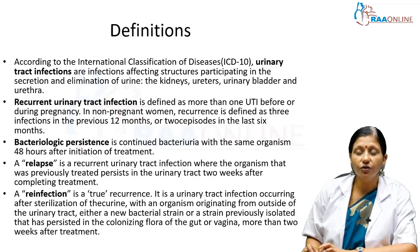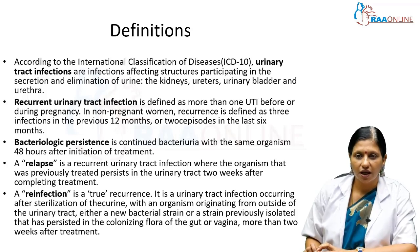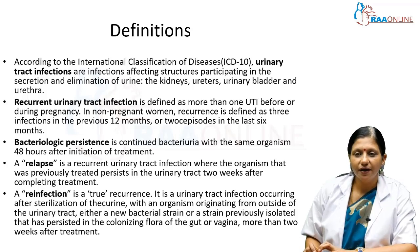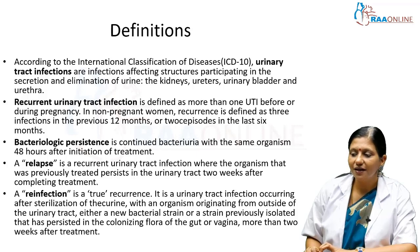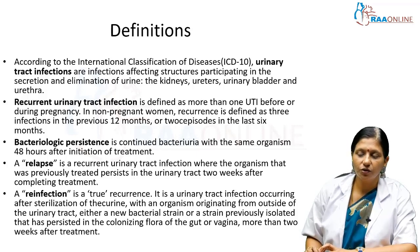How do we define recurrent urinary tract infection? In pregnancy, it is defined as one UTI episode before or during this pregnancy. In a non-pregnant woman, recurrence is defined as three infections in the previous 12 months or two episodes in the last six months.